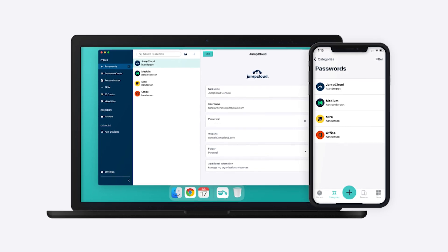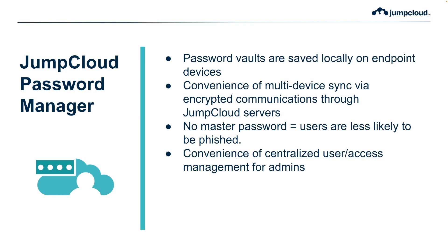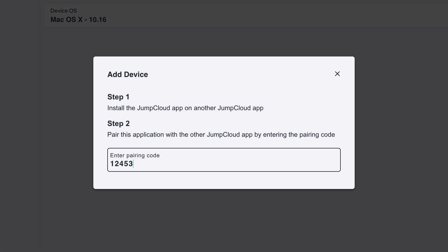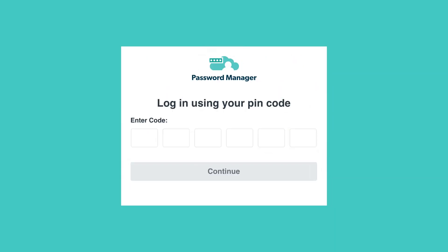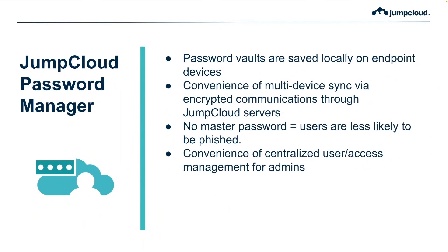The JumpCloud password manager does things differently. Like offline password managers, JumpCloud stores passwords locally instead of on a centralized database in the cloud. There's convenience here though, because it actually offers multi-device sync and encrypted communication through JumpCloud servers. There's also no longer a master password, so users are less likely to be phished. Instead, they use a local PIN or biometrics to authenticate into the local database. Finally, the JumpCloud password manager has a centralized admin portal to allow admins to manage users and their access in a single location, making JumpCloud a truly hybrid solution.